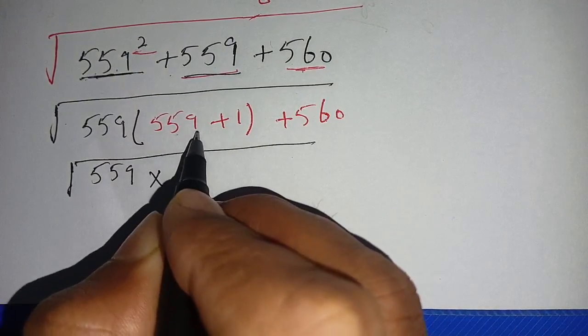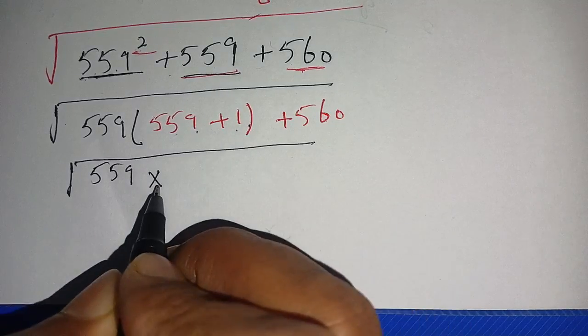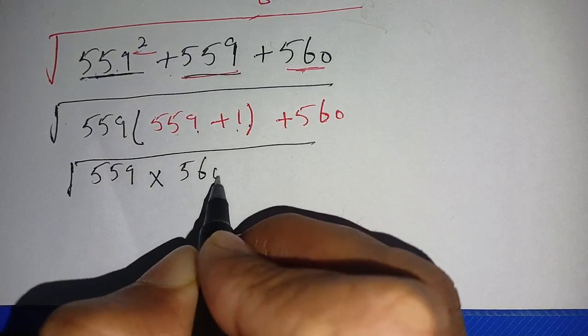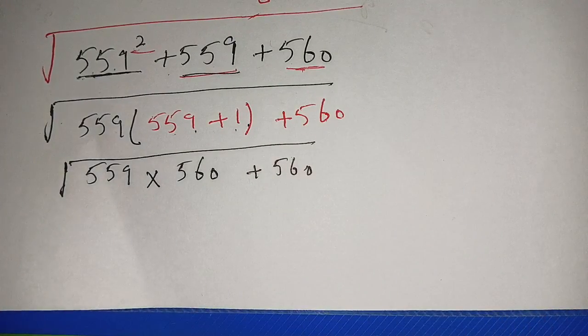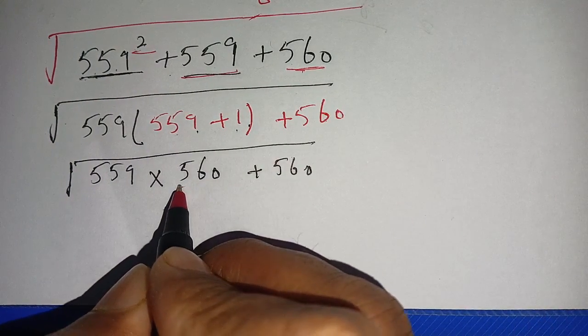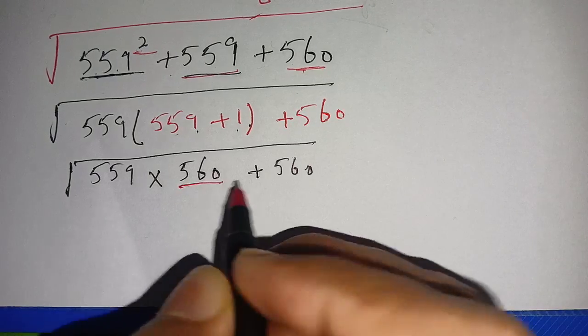On the next step, we get square root of 559 times 559 plus 1, it becomes 560, plus 560.